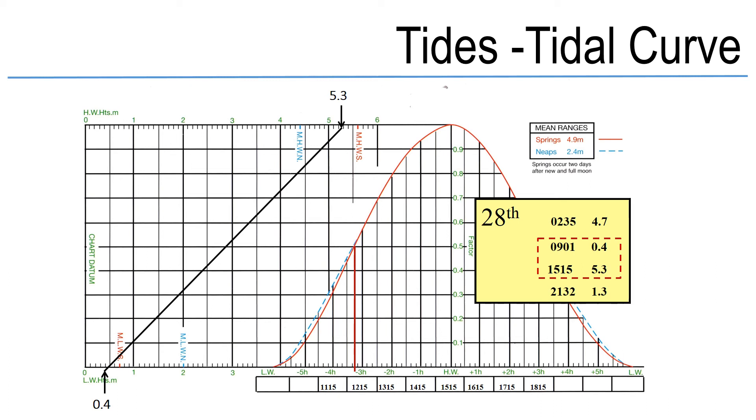You'll note at this point there are two different lines creating the curve, both the dotted line and the full red line. And we can see from the mean ranges box in the top right hand corner, depending on if my tide of the day is a spring or a neap will depend on which line I need to use.